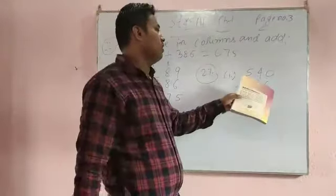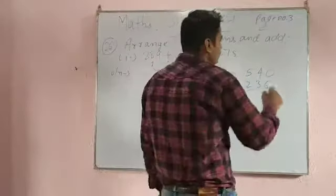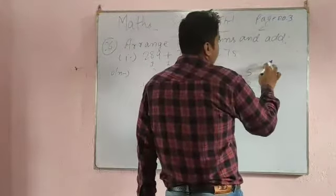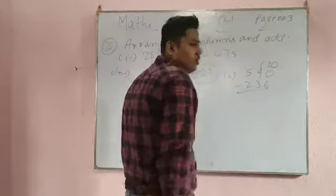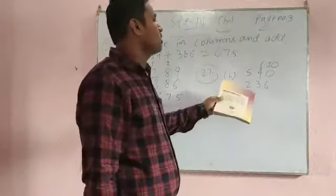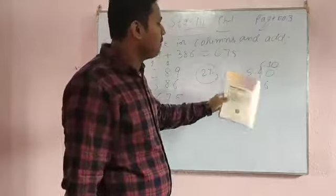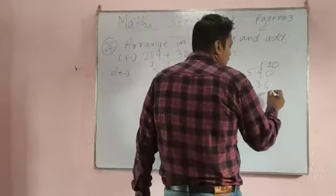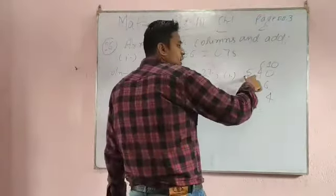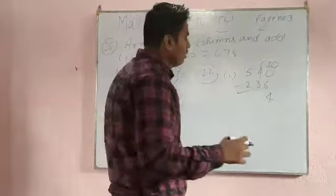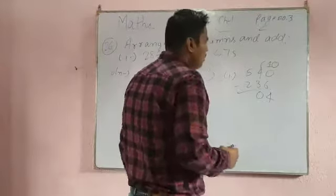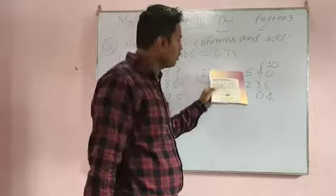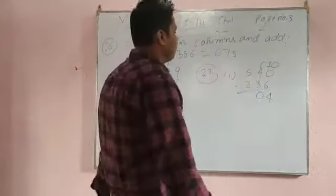This is 0 and this is 6. You cannot subtract 6 from 0, so what you will do? You will take one carry from here, then this will become 10. So 10 minus 6 will be 4. One carry you have already taken, it will become 3. 3 minus 3 is 0. 5 minus 2 is 3.